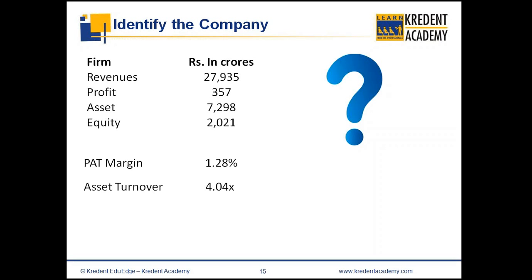Someone suggested this is an asset-heavy manufacturing company. However, looking at the asset turnover, it is 4.04 times. Generally, in most manufacturing companies, asset turnover is not so high, and asset-heavy manufacturing companies tend to have slightly higher margins. Another participant said it's a highly leveraged company — the leverage here is 3.77 times.